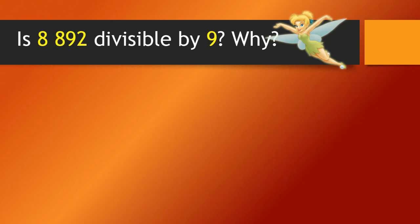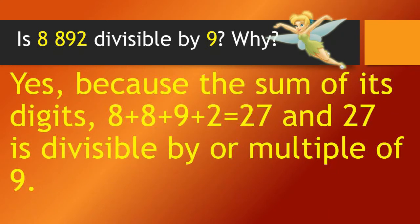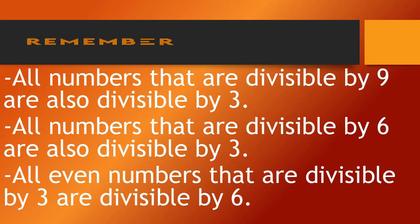Is 8,892 divisible by 9? Why? The answer is yes, because the sum of its digits — 8 plus 8 plus 9 plus 2 — is 27, and 27 is divisible by — or a multiple of — 9. Remember: all numbers divisible by 9 are also divisible by 3. All numbers divisible by 6 are also divisible by 3. All even numbers divisible by 3 are divisible by 6.